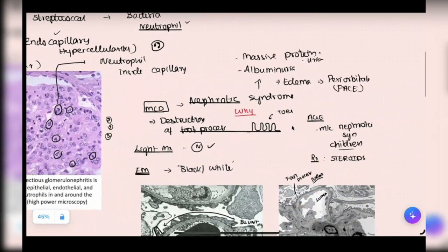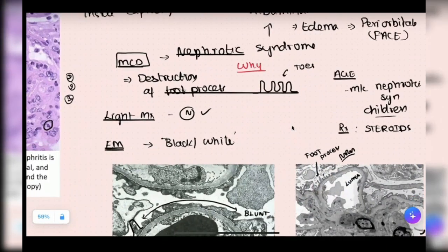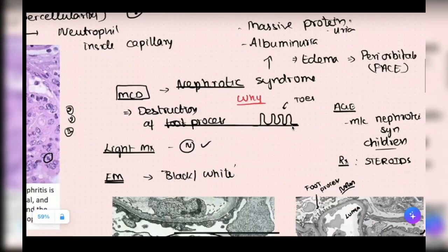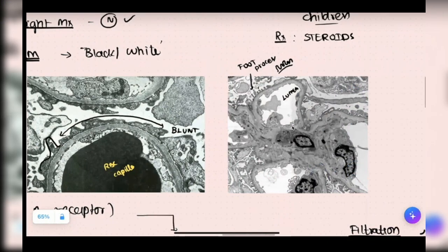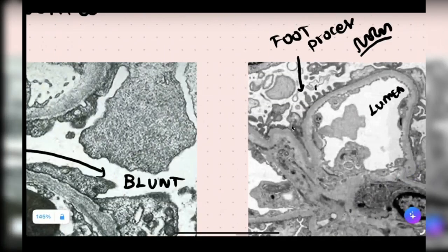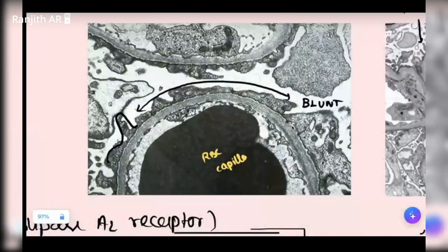Then we came to nephrotic syndrome — MCD. MCD is the most common nephrotic syndrome in children. Treatment is steroids. Pathogenesis is destruction of the foot process. If foot process is gone, the disease will be nephrotic. The patient will have massive proteinuria — selective albuminuria. Because albumin is reduced, you'll have edema. Renal edema is mostly in and around the eyeball — periorbital or facial edema. On electron microscopy, there are no podocytes; everything has been blunted.